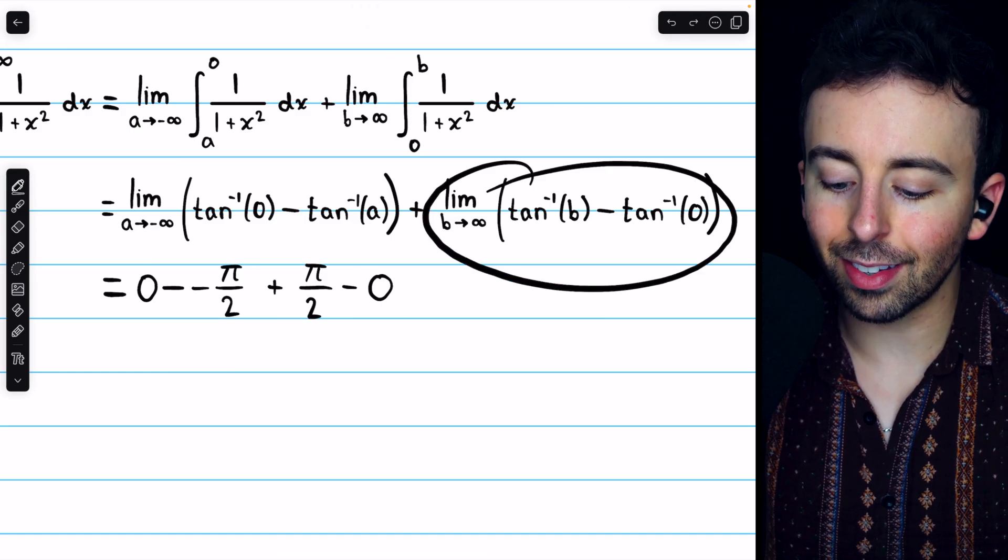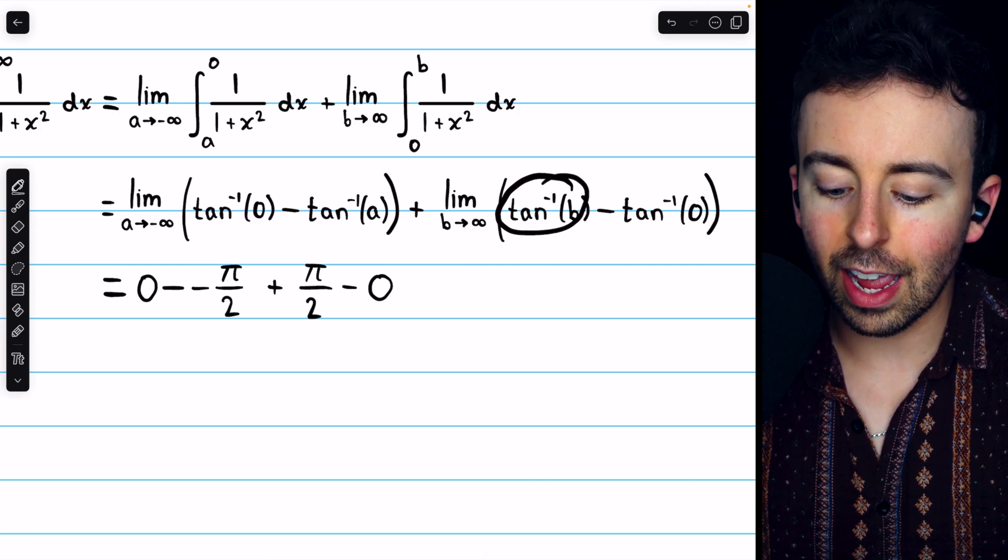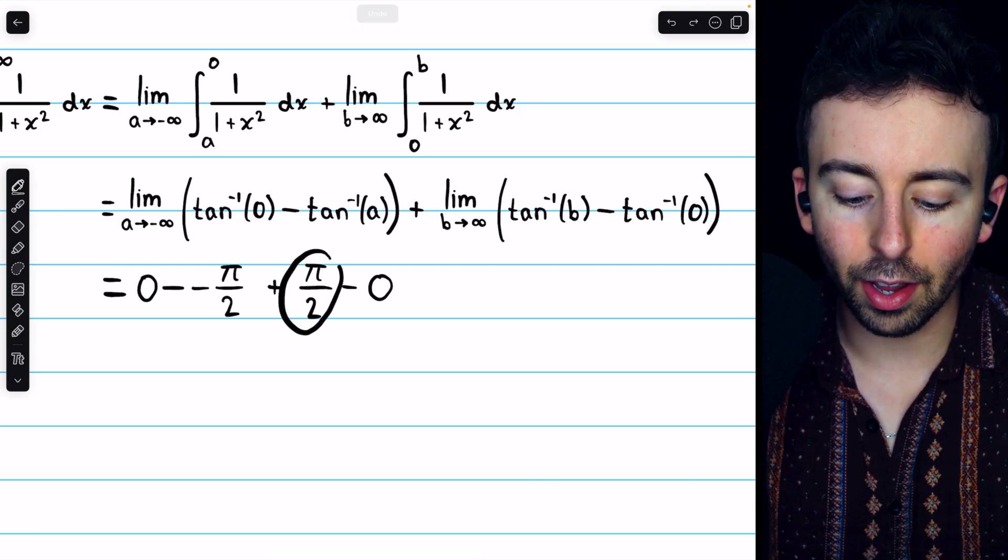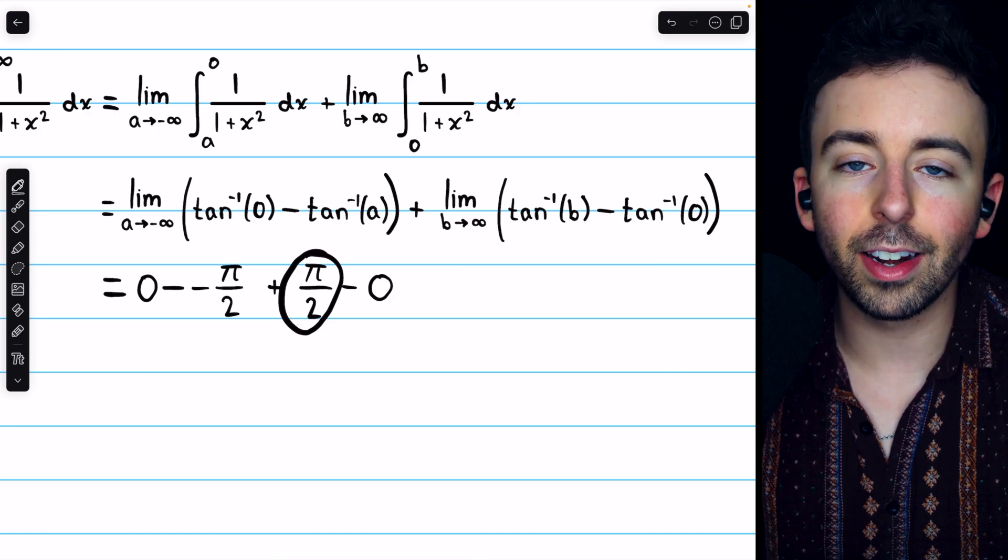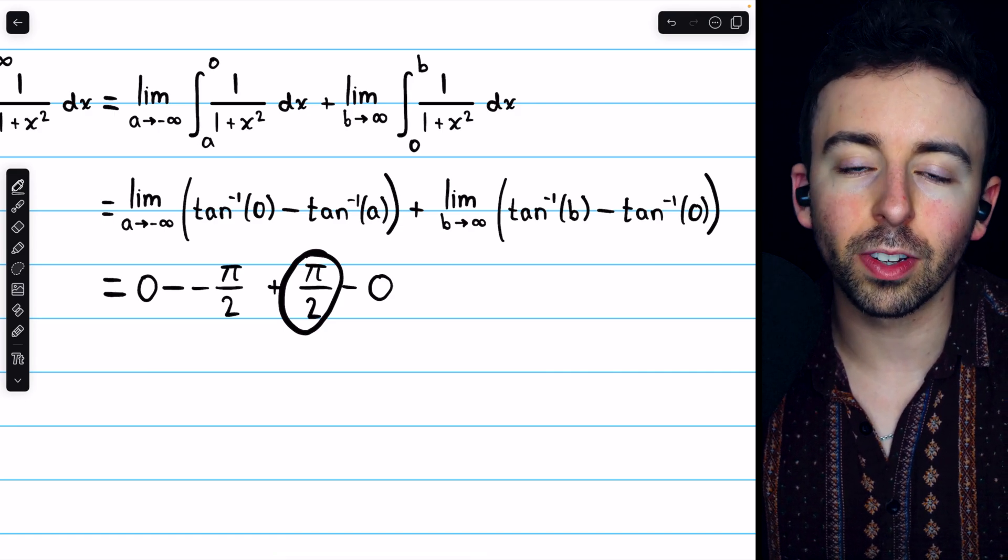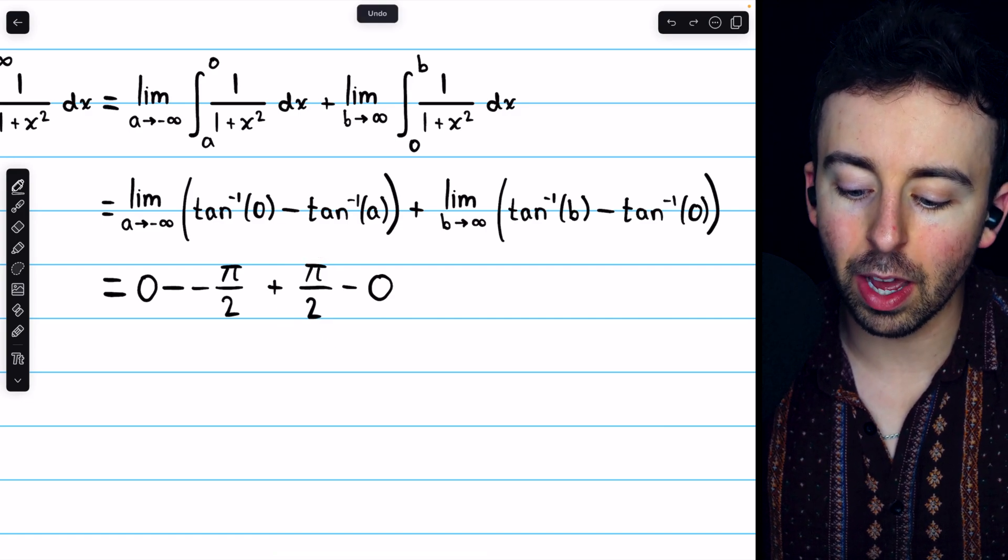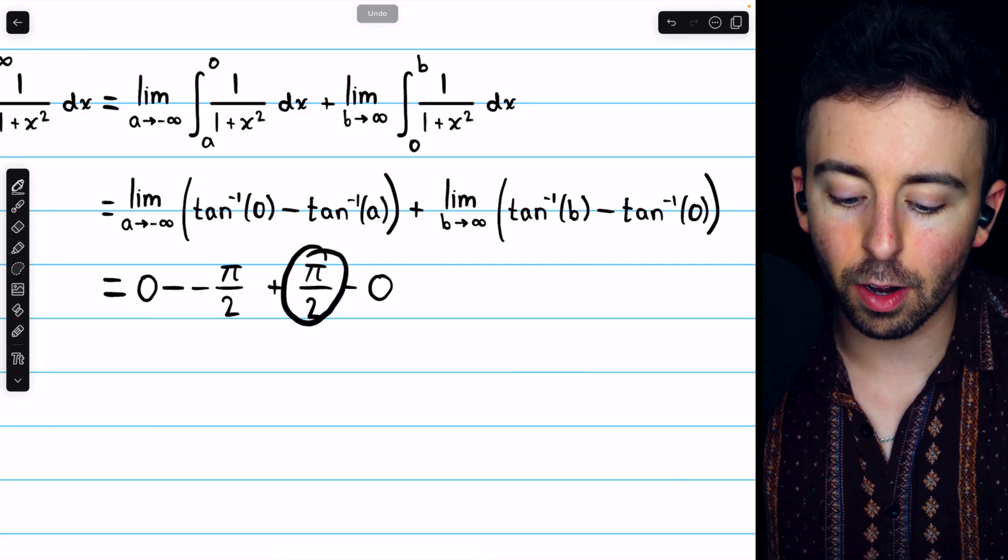So, we have 0 minus negative pi over 2. And then, a similar thing with this limit over here. Arc tan of 0 is 0, and the limit of arc tan b, as b goes to positive infinity, is positive pi over 2. As x approaches pi over 2, sine is approaching 1, cosine is approaching 0. So, that's what makes tangent go to infinity. So, the limit of arc tan of b, as b goes to infinity, is going to be pi over 2.